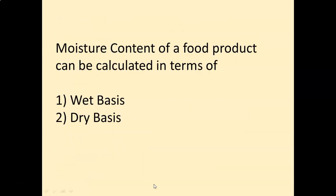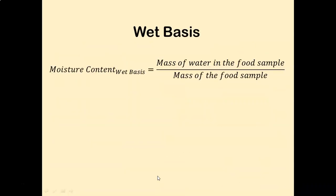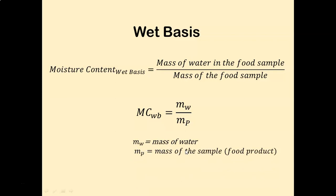The moisture content of a food product can be calculated in terms of wet basis and dry basis. Wet basis moisture content is defined as the mass of water present in the food sample per unit mass of the food sample. The formula is: MCWB = mw / mp, where mw represents the mass of water and mp represents the mass of the food sample.